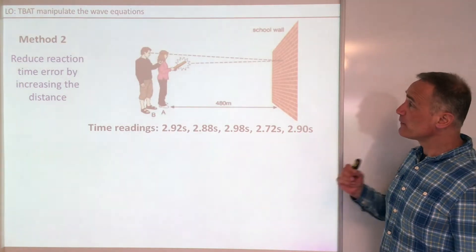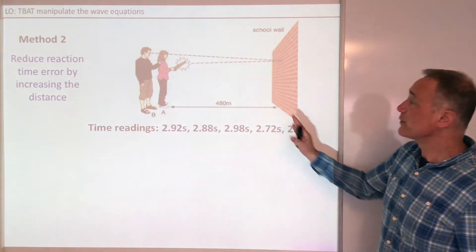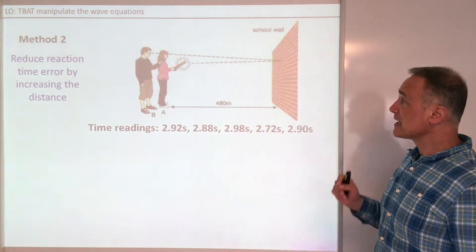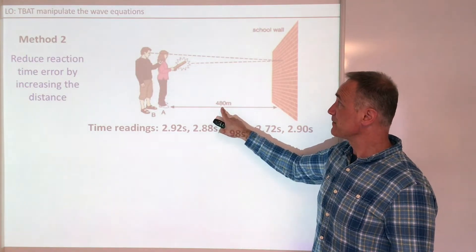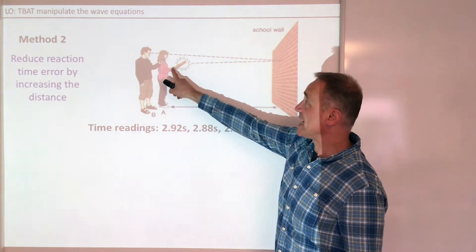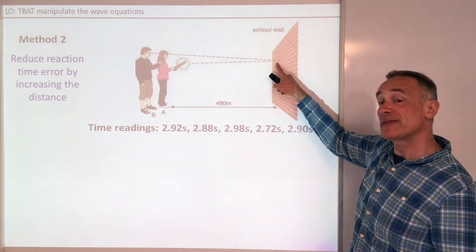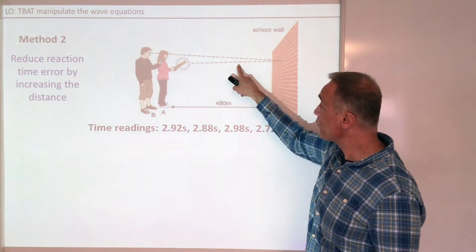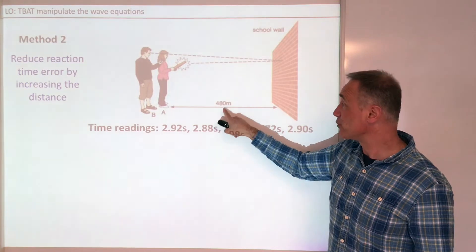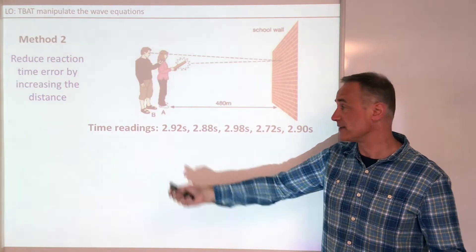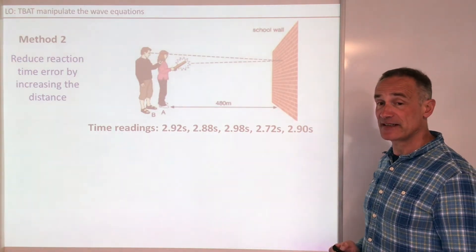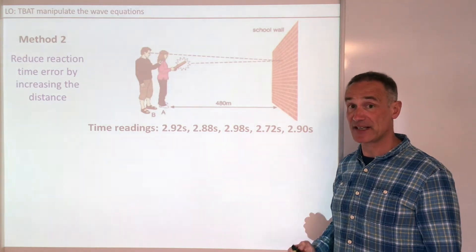So how can we make it more accurate? First, we need to increase the distance we are measuring over. One key way of doing this is using the echo system. This time we've got 480 metres. One person makes the sound; the other person starts a stopwatch when the sound is made. The sound travels 480 metres, reflects, and travels 480 metres back, and the person stops the stopwatch. The distance travelled is therefore twice 480 — a much larger distance. Pause the video, work out your mean time, then the speed of sound, and see what difference it makes.